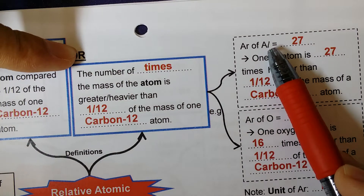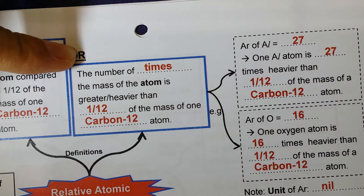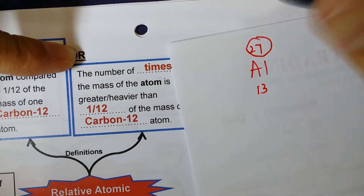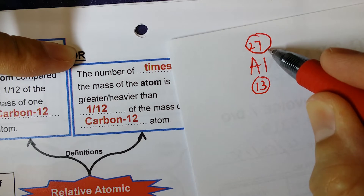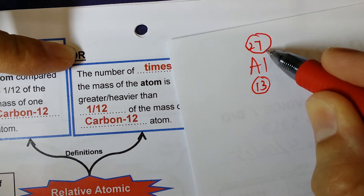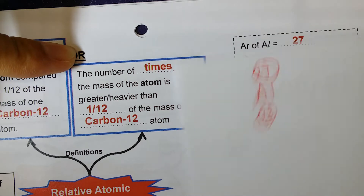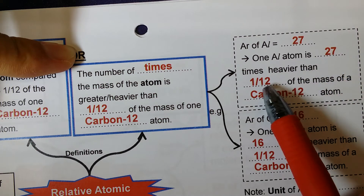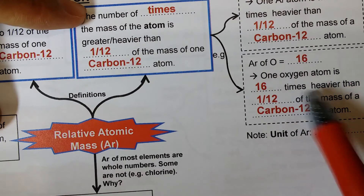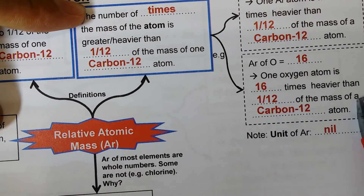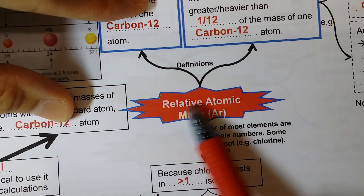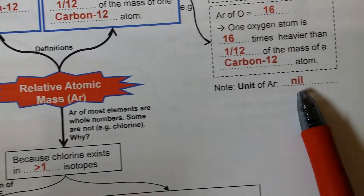The AR for aluminum in the periodic table: aluminum is Al, written as Al-27-13. So 27 is the AR, 13 is the number of protons, and 27 is the mass number — the number of protons plus neutrons — which is also the AR. So for aluminum, it is 27, meaning 1 aluminum atom is 27 times heavier than 1 over 12 of the mass of a carbon-12 atom. Since AR is relative atomic mass and 'relative' means compare, there is no unit.